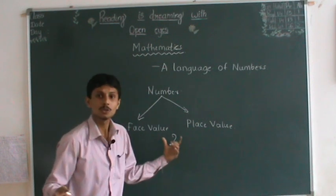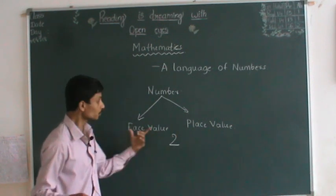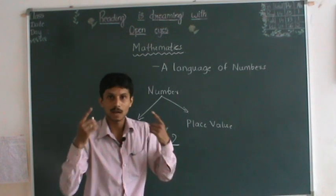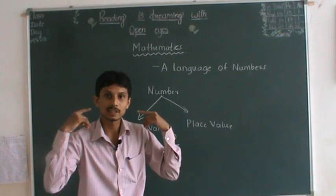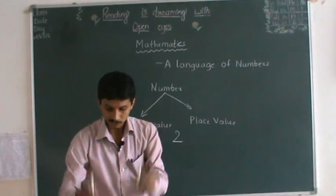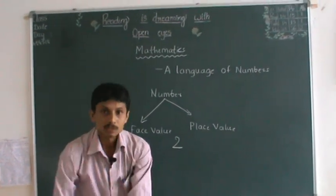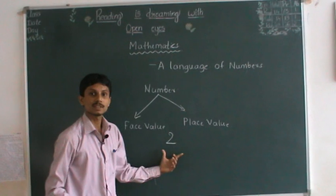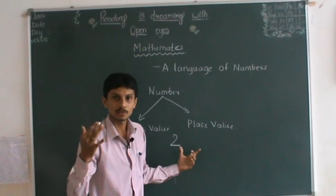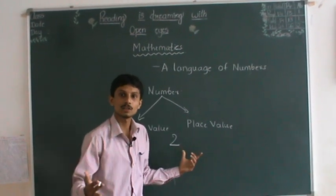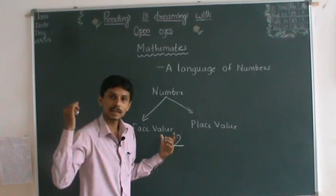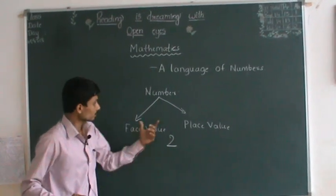A number just represents its own value — it looks like the value 2. The face value of 2 indicates 2: I have 2 eyes, I have 2 ears, I have 2 chalk pieces. The face value of 2 is simply 2. Likewise, the face value of 5 is 5, and the face value of 6 is 6.